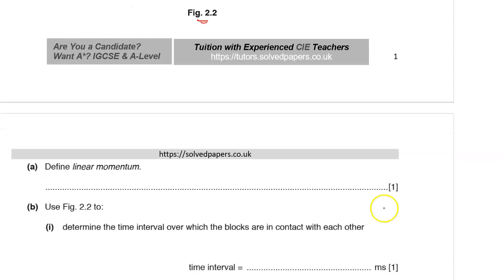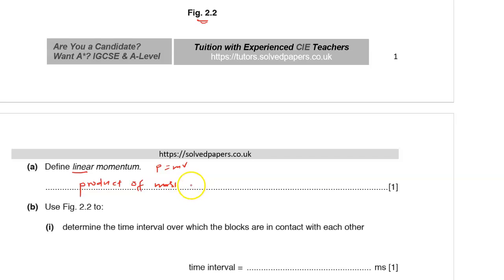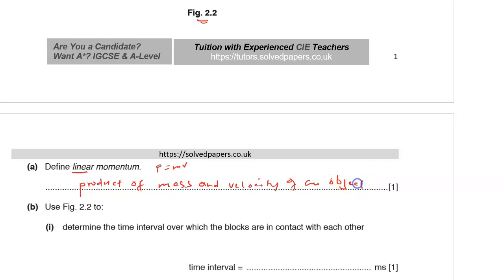Part (a): Define linear momentum. Momentum is the product of the mass of an object and the velocity of that object — that is, momentum = mass × velocity.